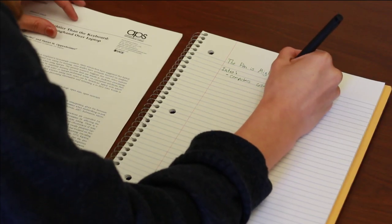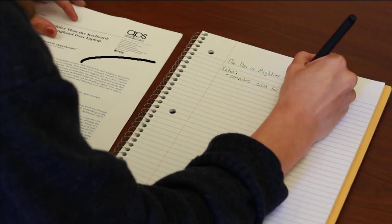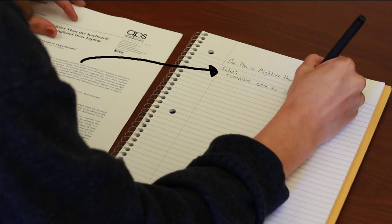Whenever I read a textbook or a research article, I like to create an outline on a separate piece of paper. In my outline, I summarize the main points and important facts from the text in my own words.